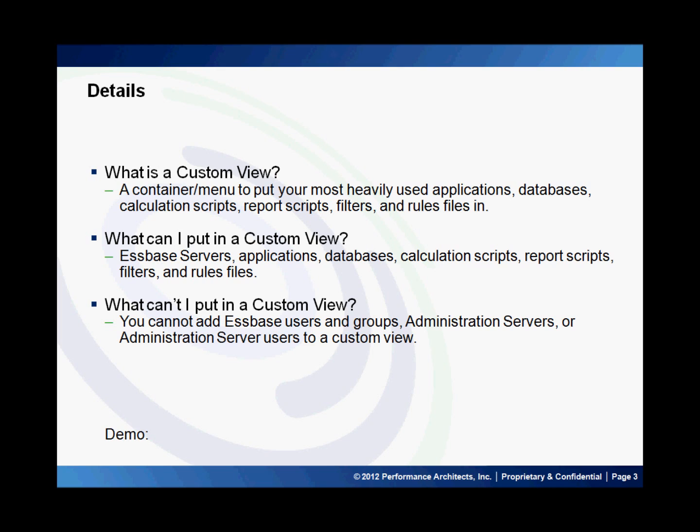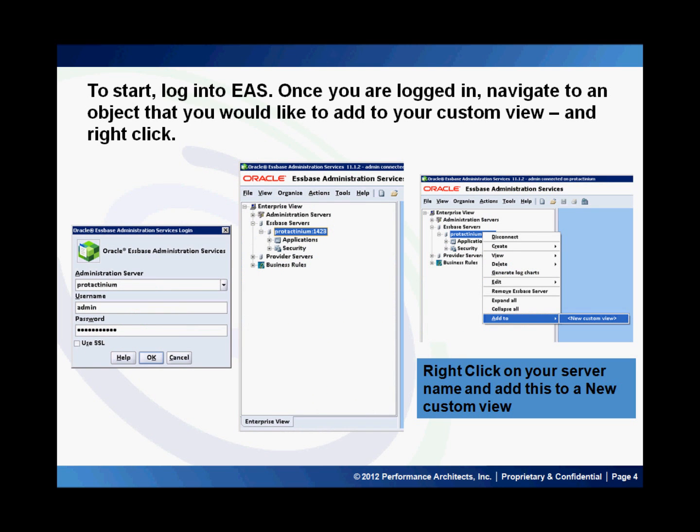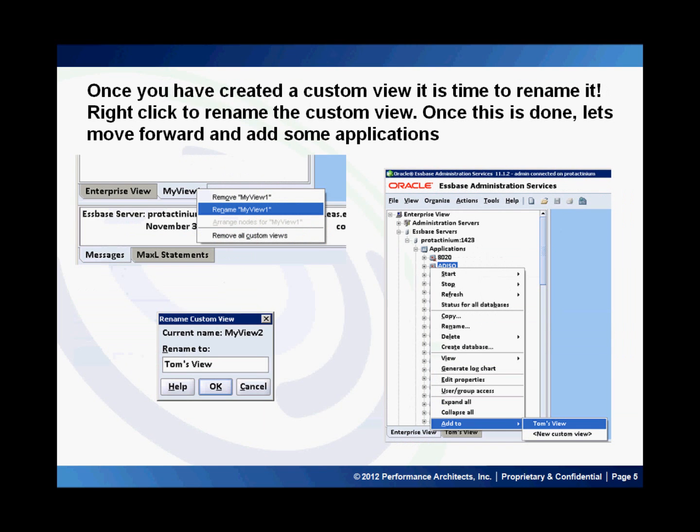Now that we've defined what a custom view is, let's go through the steps in creating one. To begin, log in to EAS. Once you are logged in, navigate to an object that you want to add to your custom view and right-click. As you can see here, I'm right-clicking on an Essbase server — and I'll explain why in just a little bit. I've right-clicked, clicked 'Add to,' and added a new custom view.